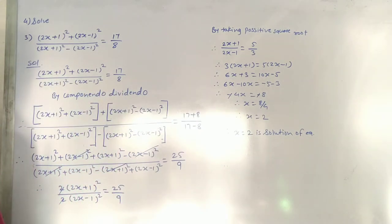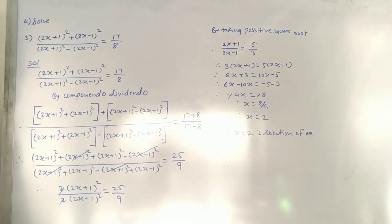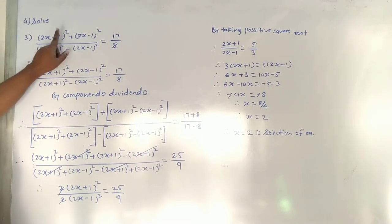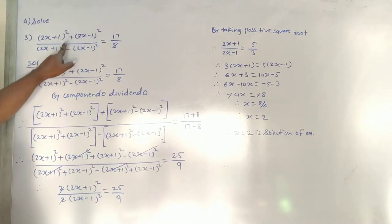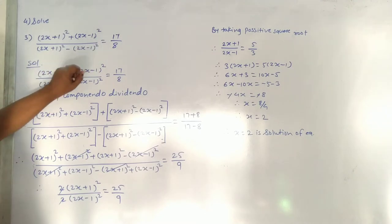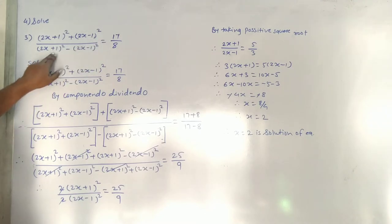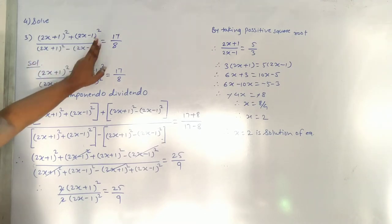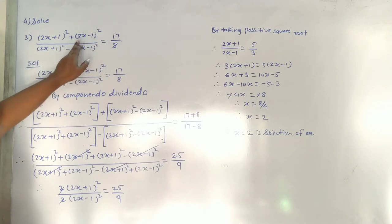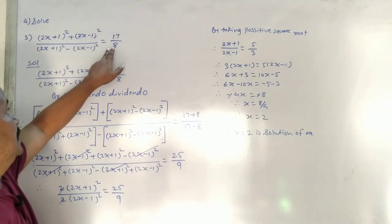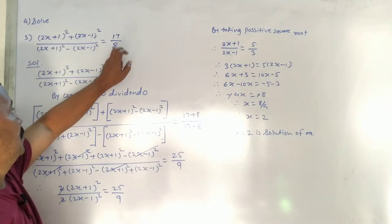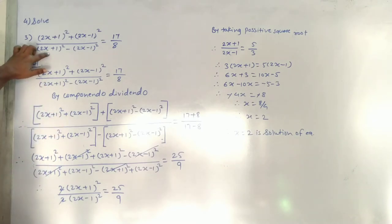So now, the third question is: (2x+1)² + (2x-1)² over (2x+1)² - (2x-1)² is equal to 7 upon 8.